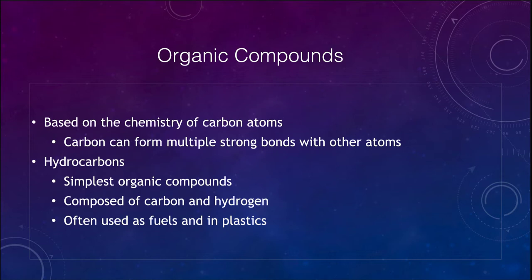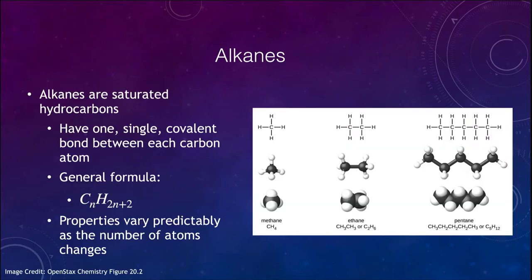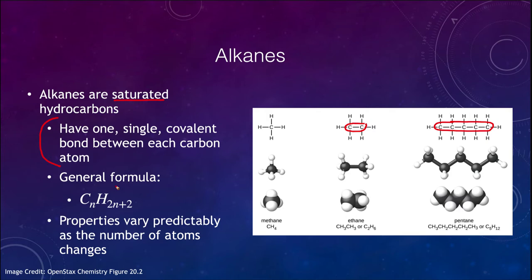The first type we want to look at are the alkanes. Alkanes are what are called saturated hydrocarbons, meaning they have one single covalent bond between each carbon atom. So each carbon atom in them has just one bond with another carbon atom, as you can see in each of these examples. They have a specific formula given by C with subscript n, and H with subscript 2n+2.